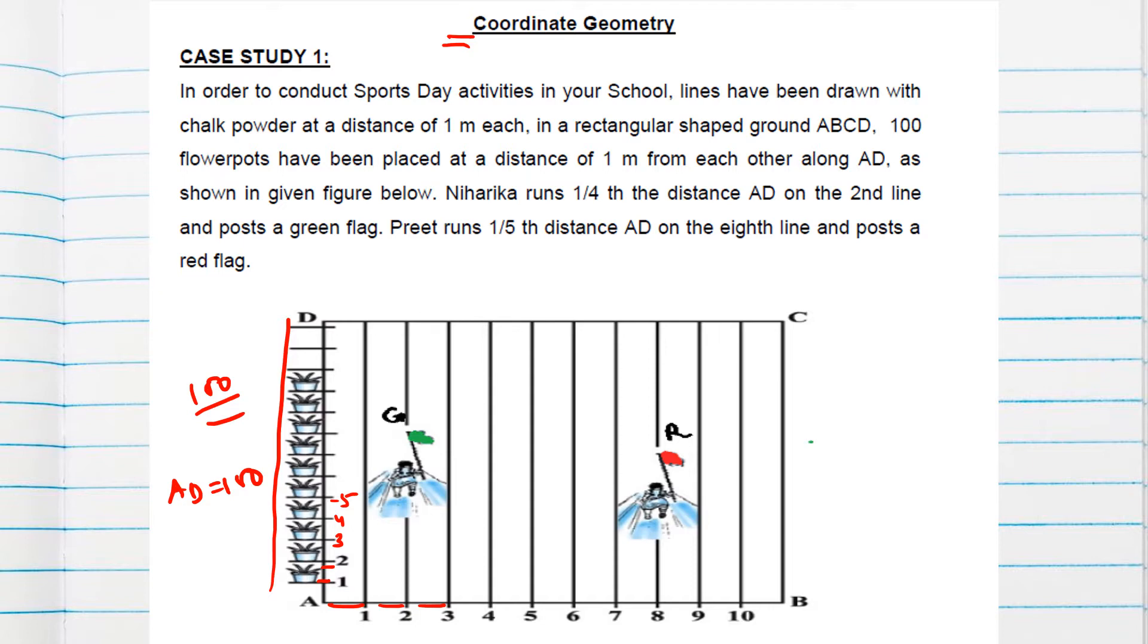As shown in the figure below, Niharika runs one-fourth of the distance AD on the second line and posts a green flag. On the second line means the x-coordinate is 2. She runs one-fourth of the distance AD, so the y-coordinate will be one-fourth of 100, which is 25. So the green flag position is (2, 25).